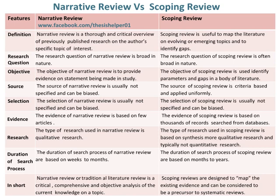The evidence of narrative review is based on few articles and examples. Whereas, the evidence of scoping review is based on thousands of records searched from databases. The type of research used in narrative review is qualitative research. Whereas, the type of research used in scoping review is based on synthesis, more qualitative research, and typically not quantitative research.